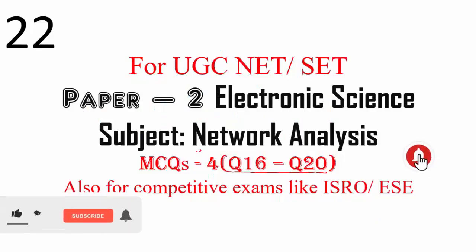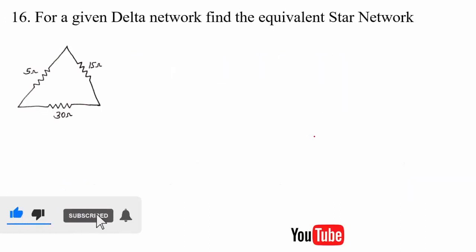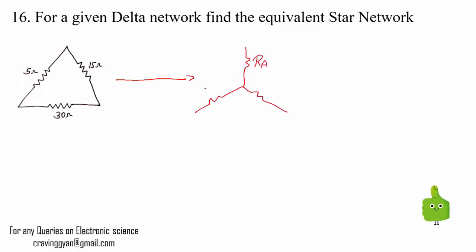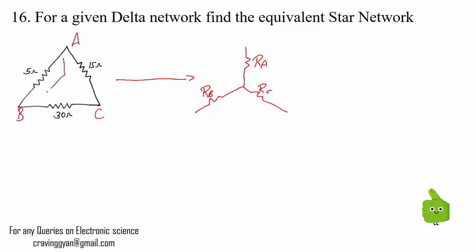Hello friends, in this video let us discuss network analysis MCQs. If you are preparing for UGC NET exams or SET exams, this video will be very helpful. Starting with question 16, they have given a delta network and you have to write the equivalent star network. Let me name the resistances as Ra, Rb, and Rc. The terminals are A, B, and C.